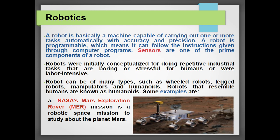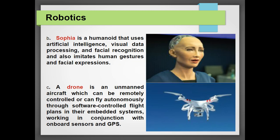We have to understand that for any kind of artificial intelligence or sensing machine, the best thing to keep in mind is that we need something called a sensor. In robotics or whatever we call artificial intelligence, the basic or prime component required is a sensor. For example, Sophia is a humanoid that uses artificial intelligence, visual data processing, facial recognition, and also imitates human gestures and facial expressions. It is sensing everything — eye contact, facial recognition, and even human-based decision thinking.